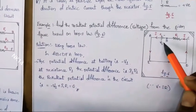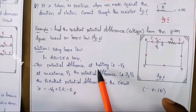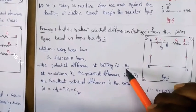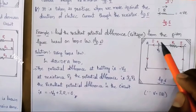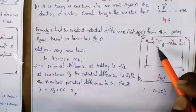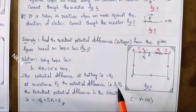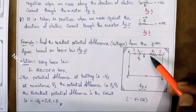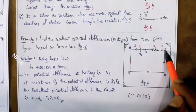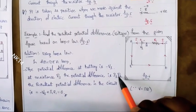Let's proceed according to our sign conventions. The potential difference at the battery is negative voltage, so we get minus V1. Why minus V1? As we saw in the first point, if the EMF is moving from positive to negative, the output is negative, so we take minus V1. At resistance R1, the potential difference is I1 R1. The potential difference is moving from B to C, but the current is moving from C to B, so both are in opposite directions — therefore we take it as positive. This satisfies the fifth point.